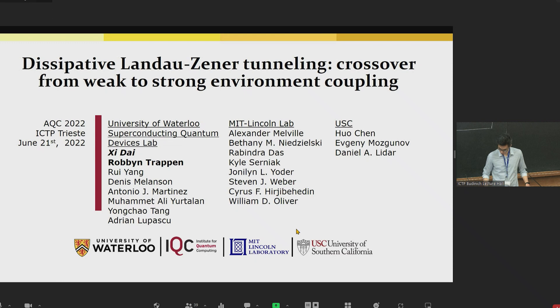The Landau-Zener problem is a famous problem where you have two interacting levels where you start in the infinite past in one of the states, and then you linearly sweep the energy separation between the two levels and they come together forming an anti-crossing with gap delta, and then linearly goes away again. The problem is what is the transition probability. If you start in the blue state, what's the probability that it remains in the blue state at the end of the sweep?